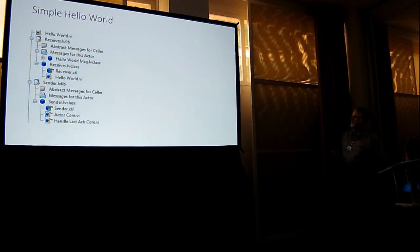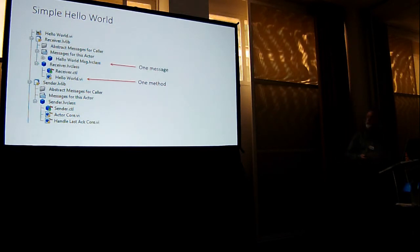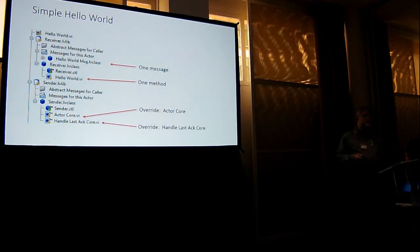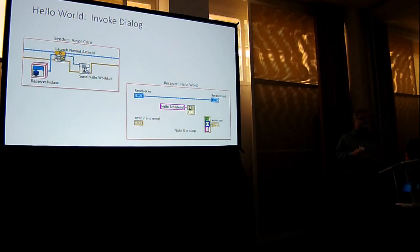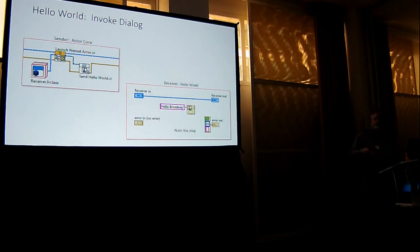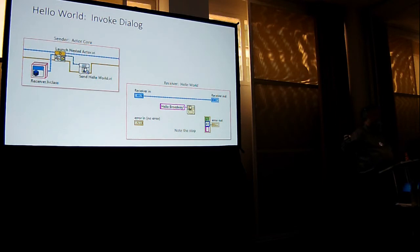What I finally settled on: one method — Hello World; one message to invoke Hello World; an override of actor core because we have to reach something; and an override of handle last ack core. Our sender actor in its actor core launches the receiver, which announces Hello World, and sends the Hello World message right away. When the receiver gets that message it invokes the Hello World VI — we get our one-button dialog that says Hello Broadway. These are actors, after all, and if you're an actor, Broadway's the whole world.